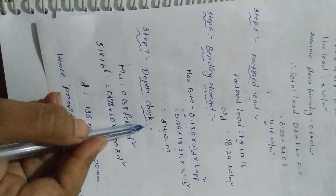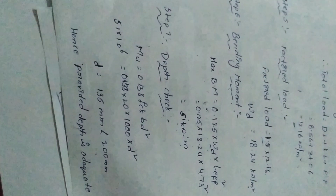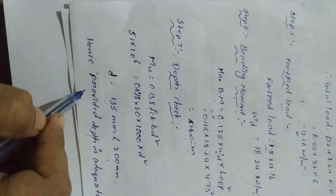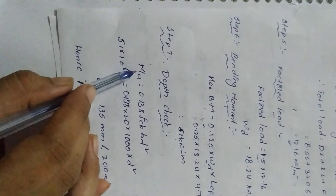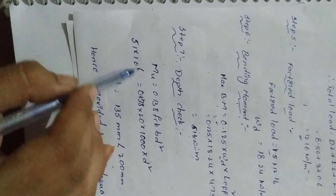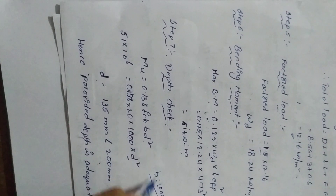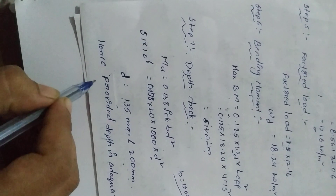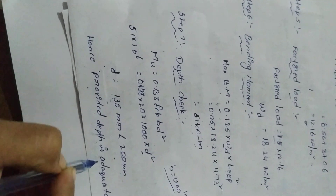Step 7: Depth checking. We already provided effective depth of 200 mm. Using the formula M_u = 0.138 × fck × b × d², with b = 1000 mm, solving for d gives 135 mm. Since 135 mm is less than the provided 200 mm, the provided depth is adequate.